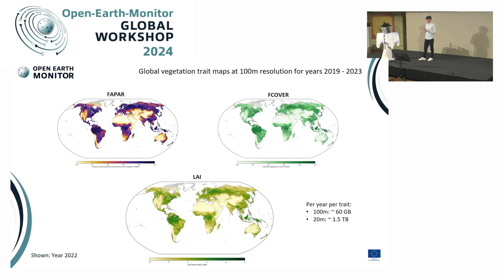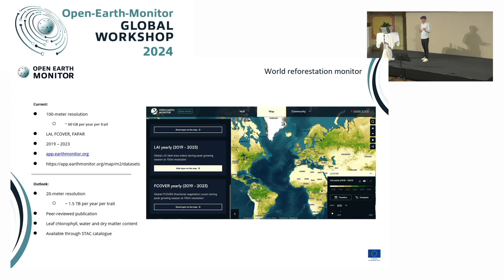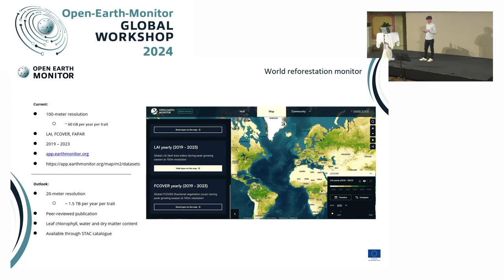We now have global maps of these three traits — huge in data and in size, currently at 100-meter resolution from the year 2019 onwards. But this is not where we want to end up. The Sentinel-2 data offers higher spatial resolution, so we are thinking about moving to 20-meter resolution, which is doable in a reasonable amount of computation. Importantly, we also look at other traits the mechanistic model would allow us to retrieve: specifically leaf chlorophyll or canopy chlorophyll content, leaf water, and leaf dry matter content.